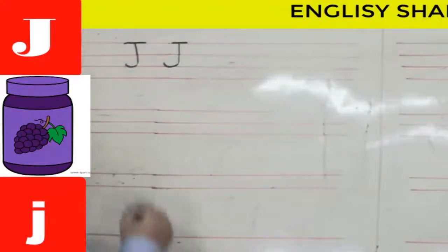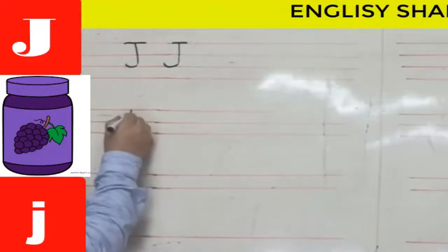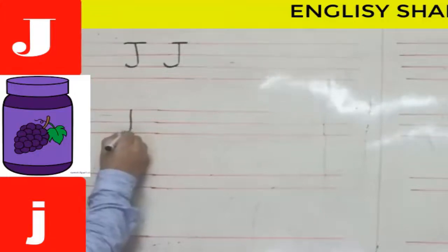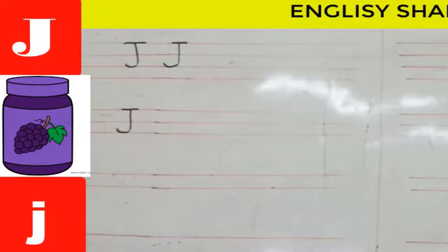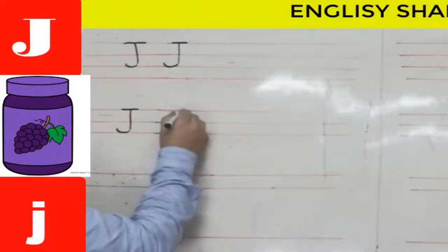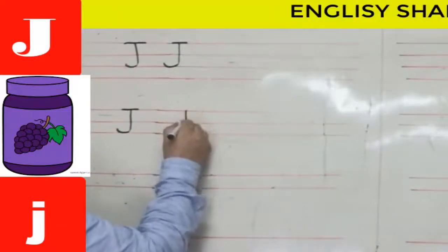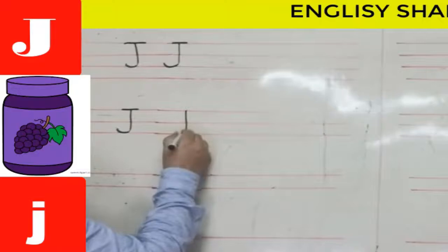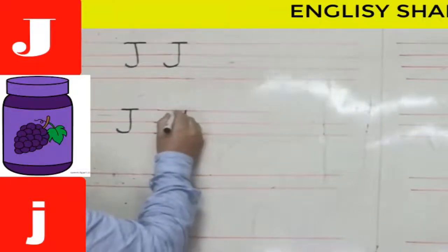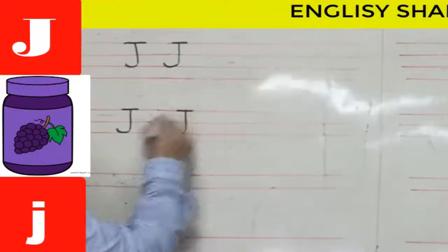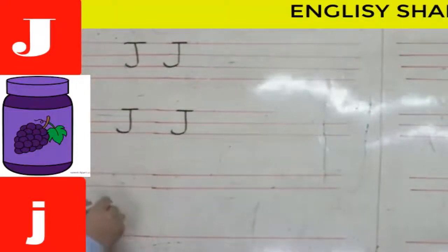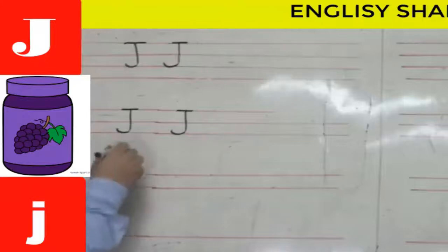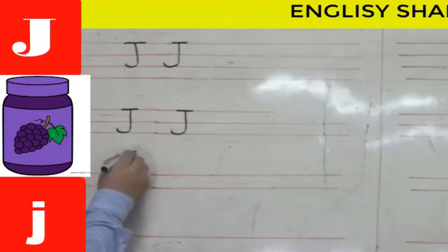Now let's see how I write uppercase J on three lines. I start at the top, go to the third line, curve at the bottom, then make a sleeping line across. Again: start at the top, go down, curve at the bottom, then a sleeping line across the top.